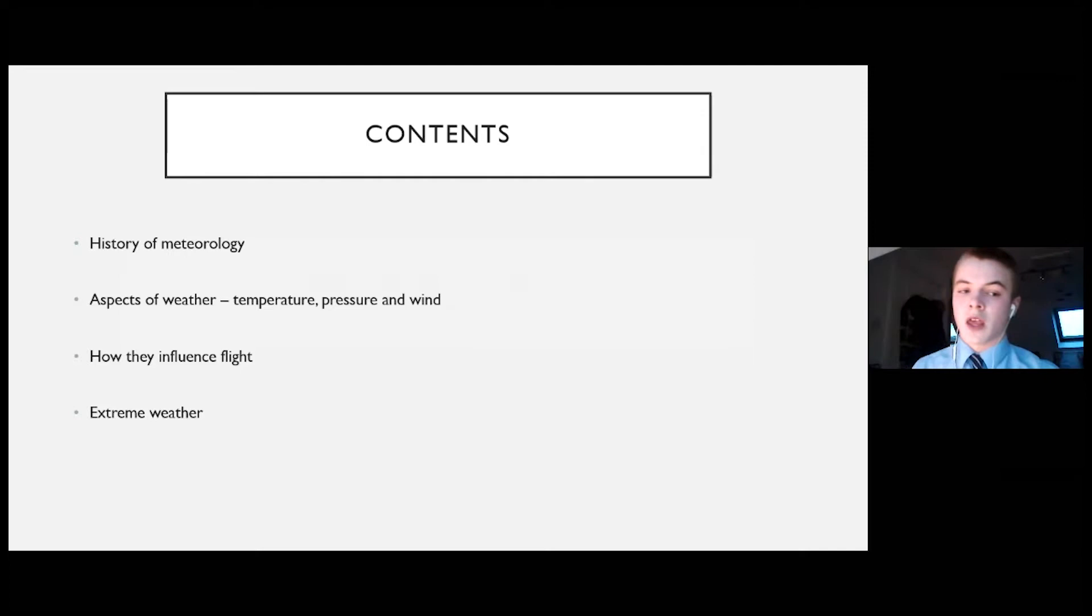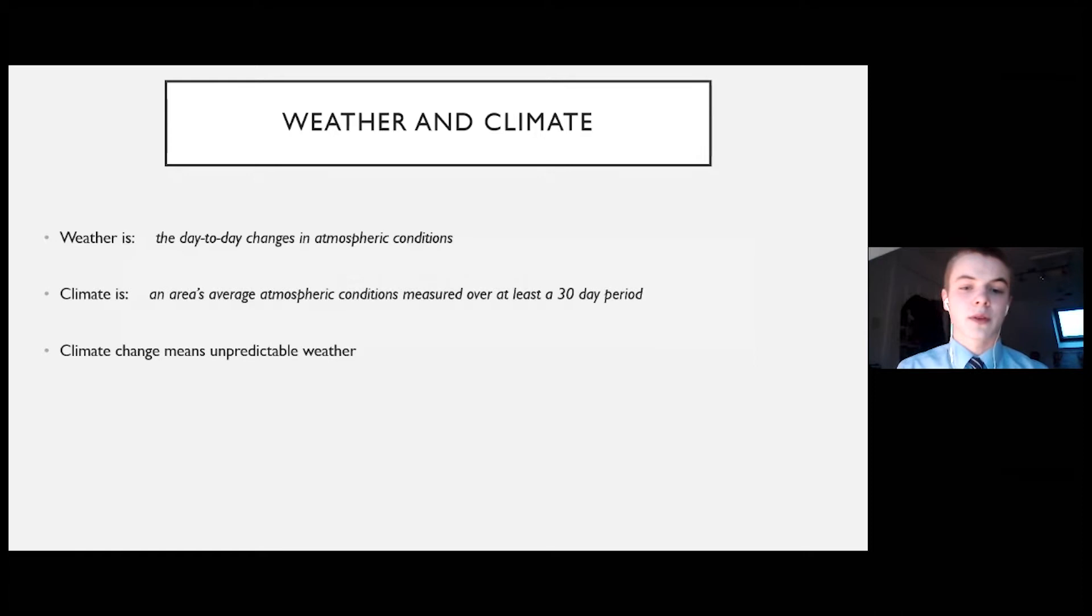I will first talk about the history of meteorology, then aspects of weather including temperature, pressure and wind, then how they influence flight and finally some extreme weather examples. First though, what is the difference between weather and climate? Well, by definition weather is the day-to-day changes in atmospheric conditions, for example cloud cover, wind strength and precipitation. Climate, however, is an area's average atmospheric conditions measured over at least a 30-day period, but it is usually measured over around 30 years in most countries.